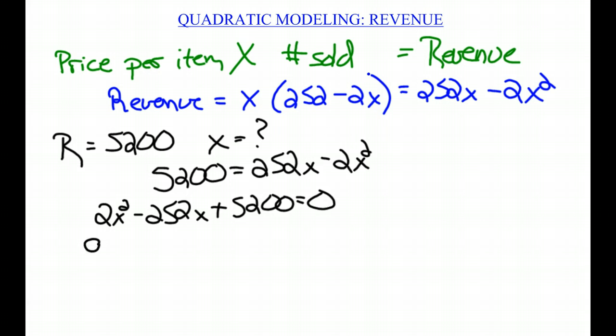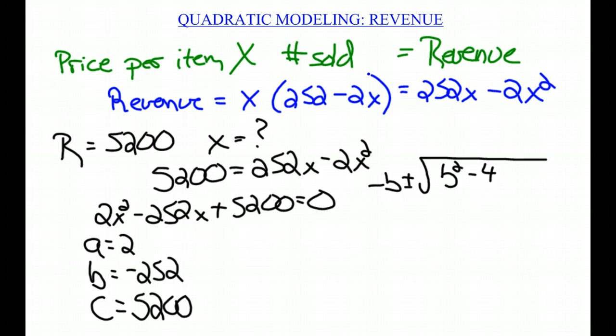Where A equals 2, B equals negative 252, and C equals 5200. And you know the quadratic formula: negative B plus or minus the square root of (B squared minus 4AC), all over 2A.